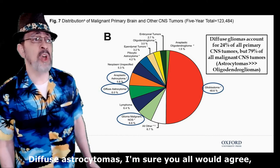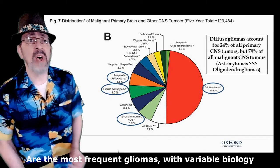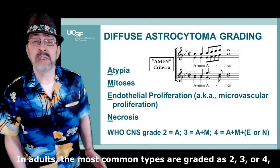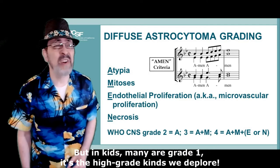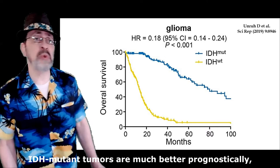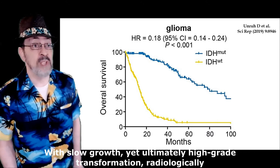Astrocytomas, I'm sure you all would agree, are the most frequent with variable biology. In adults the most common types are graded as 2, 3, or 4, but in kids many are grade 1. It's the high-grade kinds we deplore. IDH mutant tumors are much better prognostically.